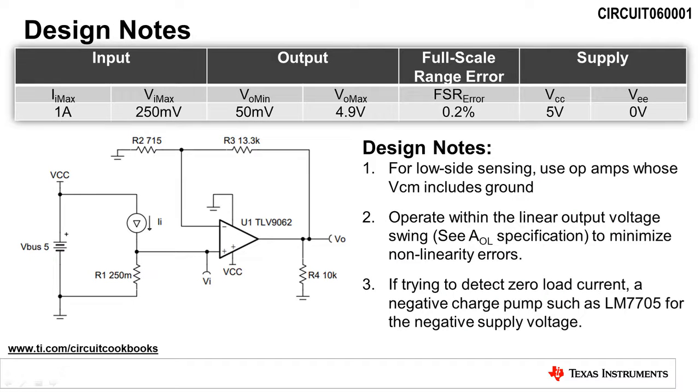When designing low side current sensing amplifier circuits, there are a few design notes to be aware of. First, be sure to use an op amp whose common mode voltage, or VCM, includes ground.